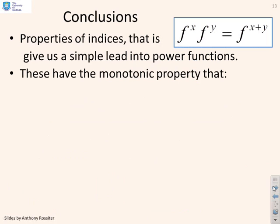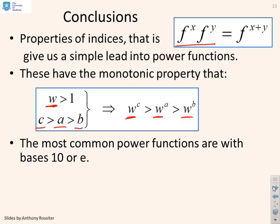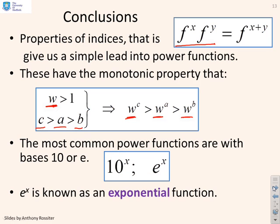So, conclusions. We've reminded you of the properties of indices that give us basically things like this, f to the x times f to the y equals f x plus y. These power functions have a monotonic property, so assuming w is bigger than 1, then c greater than a greater than b gives you w to the power c greater than w to the power a greater than w to the power b. The most common power functions are with bases 10 or e, so we get 10 to the x or e to the x, and e to the x is known as an exponential function.